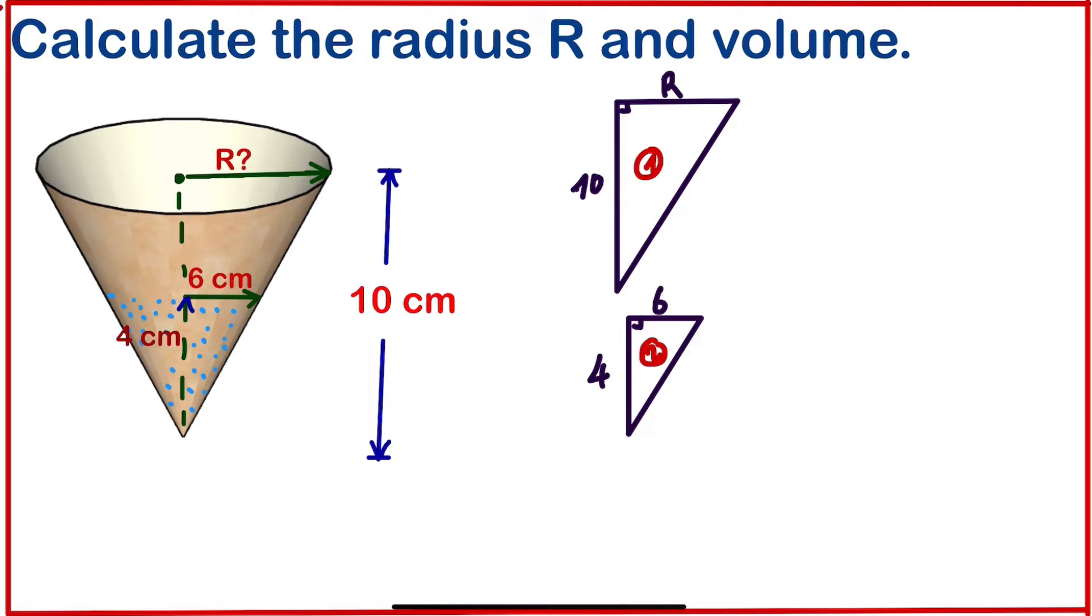If we start here, this side and this side are similar. So if we write the ratio, R divided by 6 should be equal to 10 divided by 4. If we cross multiply to get R, R will be equal to 10 times 6 divided by 4. So 10 times 6 is 60, 60 divided by 4 will give us 15. So we are going to have 15 centimeters. This is our radius.